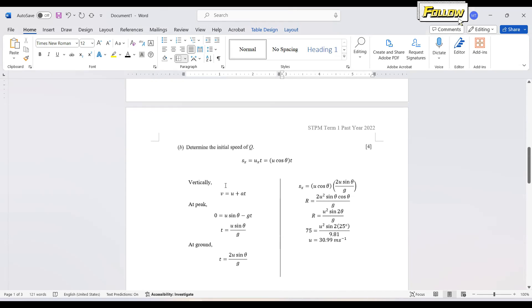So we can refer to the equation of v equals u plus at. This is a quite popular equation when we talk about the vertical components. Because at peak, we know that the vertical velocity is equal to zero when the object at the peak, or the maximum height. So from here, we can obtain the equation of t is u sin theta over g. So this is the time required to reach the maximum height.